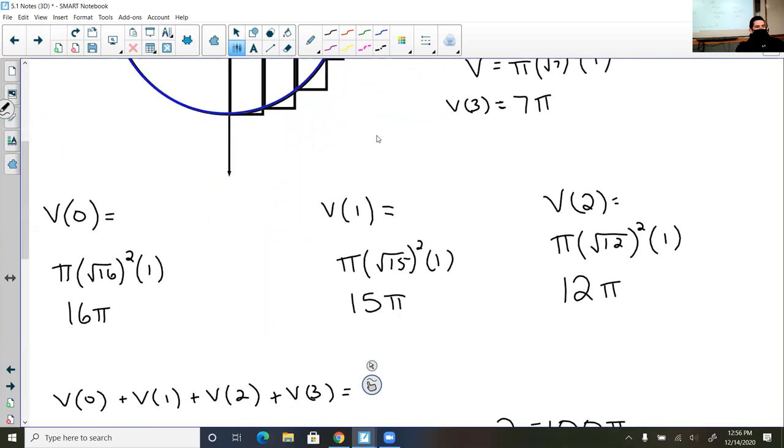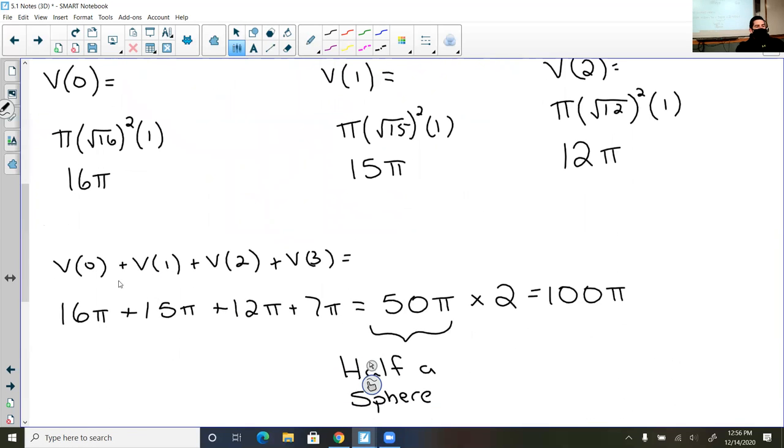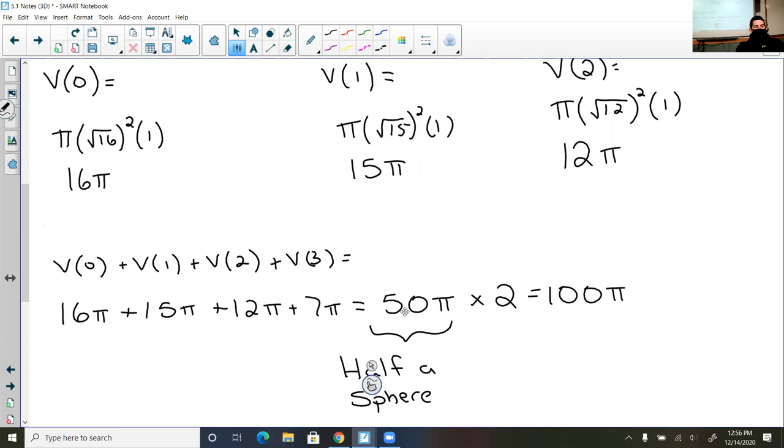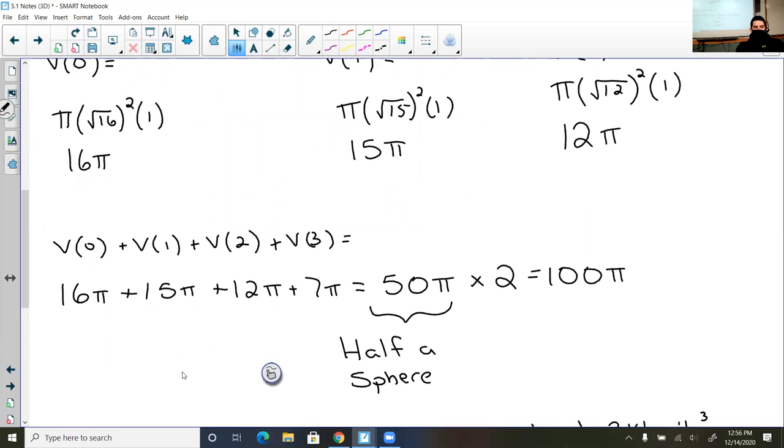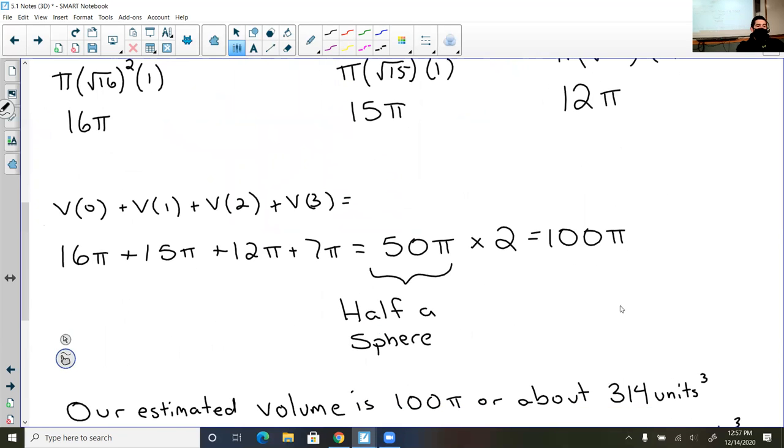And so the approximation to the volume would be the sum of those four volumes. And so when I add those four volumes together, I get 50 pi, which is half of a sphere. And so then I'm going to double that to get the full sphere, and I'm getting 100 pi. So I'm claiming that the volume of the sphere is 100 pi, or 314 cubic units.